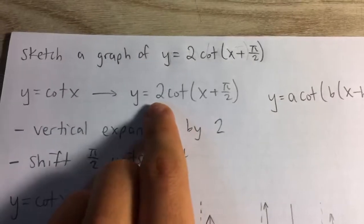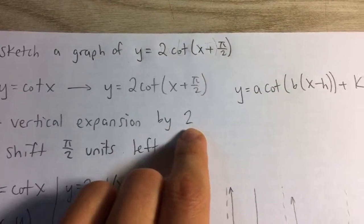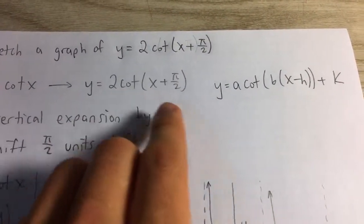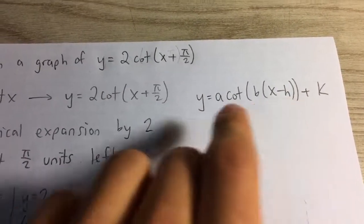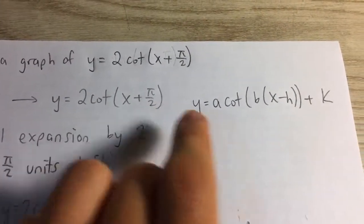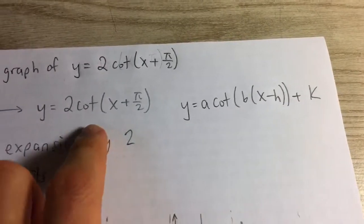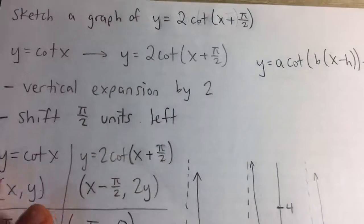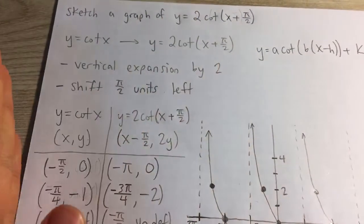And so here we have vertical expansion by a factor of 2 because our a value is 2, and also our h value is negative pi over 2 because x minus negative pi over 2 is x plus pi over 2. And because it's a negative value we're shifting to the left,